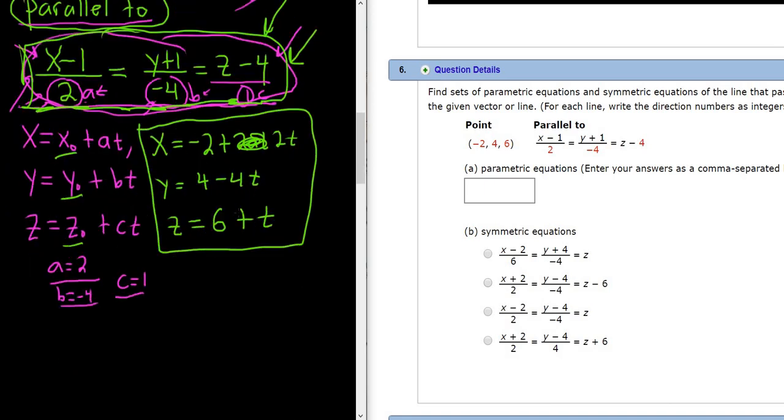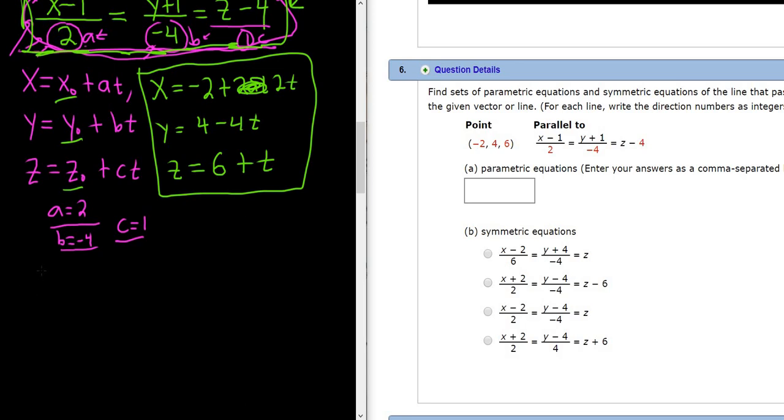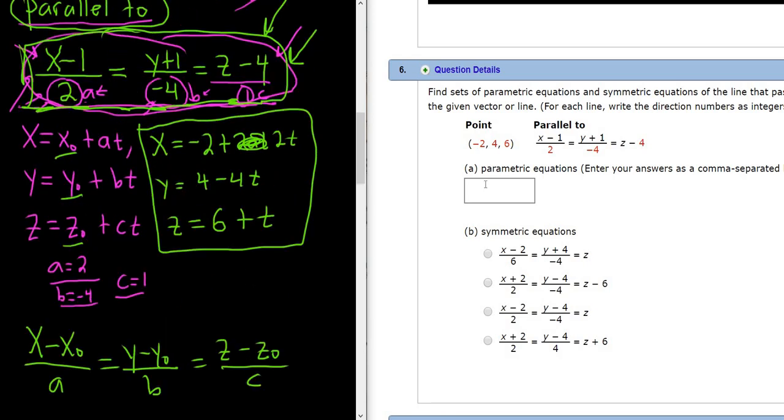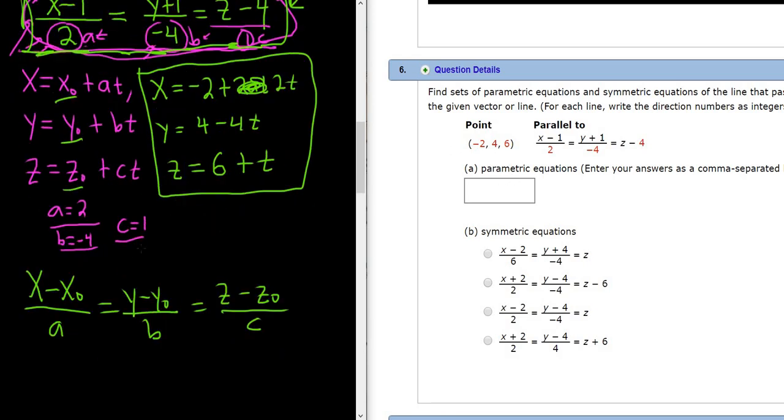To find the symmetric equation, there's a formula. The formula is the following: (x - x₀)/a equals (y - y₀)/b equals (z - z₀)/c. So we could just plug in everything we have. Let me go ahead and scroll back up. Oh, I guess it's here, -2, 4, 6.